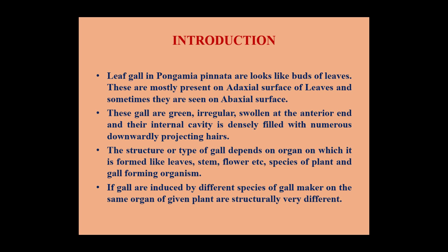These galls are mostly present on the adaxial surface of the leaves, but sometimes they may be seen on the abaxial surface. These galls are green, irregular, swollen at the anterior end, and their internal cavity is densely filled with numerous downwardly projecting hairs. The structure or type of gall depends on the organ on which it is formed — like leaves, stem, flower, etc. — and the species of plant and gall-forming organism. If the galls are induced by different species of gall maker on the same organ of a given plant, they are structurally very different.